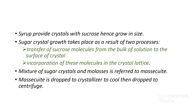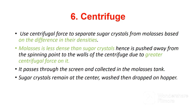Massecuite is dropped to the crystallizer to cool, then dropped to the centrifuge. The sixth stage of sugarcane processing is centrifugation. The centrifuge uses centrifugal force to separate sugar crystals from molasses based on the difference in their densities. Molasses is less dense than sugar crystals, hence it is pushed away from the spinning point to the walls of the centrifuge due to greater centrifugal force on it. This molasses passes through the screen and is collected in the molasses tank, while sugar crystals remain at the center. They are washed to remove the layers of molasses, then dropped onto the conveyor.